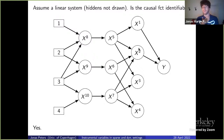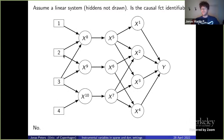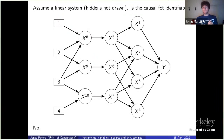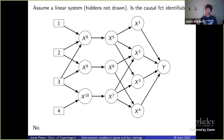The next example is not identifiable. Despite having four instruments and four parents, there is a bottleneck of three edges in between. The four-dimensional covariance of the instruments must pass through only three edges, so there is not enough heterogeneity entering the parents of y. The answer here is no — this setup is not identifiable.